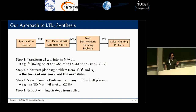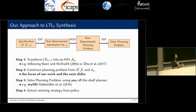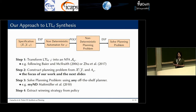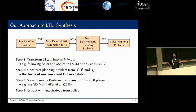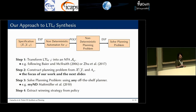Our approach comprises four steps. In step one, we transform the specification into an NFA. In step two, we construct a FOND planning problem from X, Y, and the dynamics of the automaton. In step three, we solve the resulting FOND planning problem using any off-the-shelf planner. And in step four, we extract a winning strategy from a solution — a policy of the FOND planning problem.